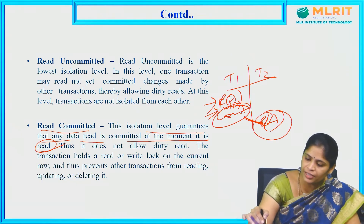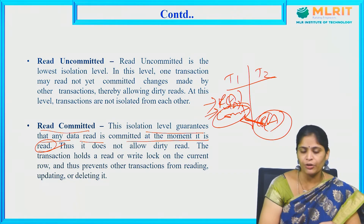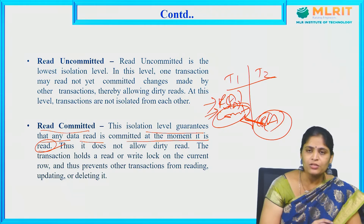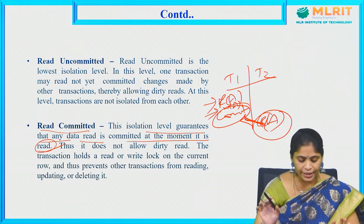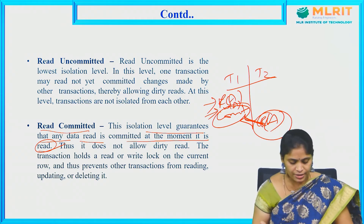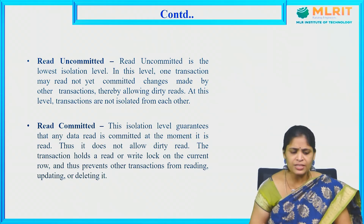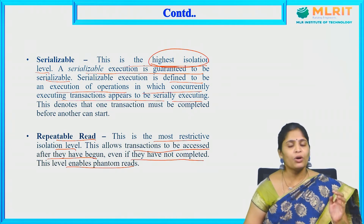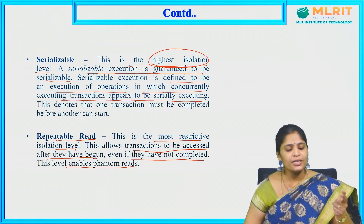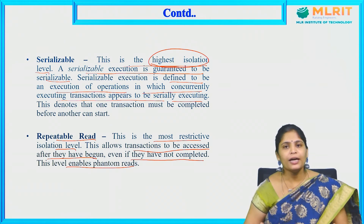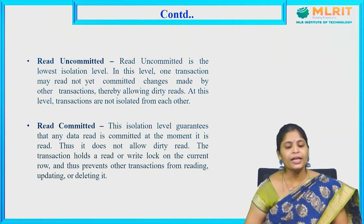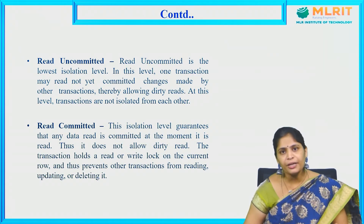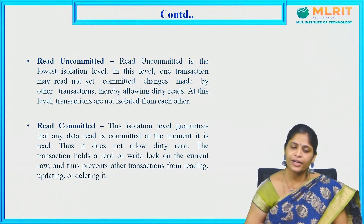Reading the data item after committing only — this may lead the data to a consistent state. These are the four isolation levels: Serializable, Repeatable Read, Read Uncommitted, and Read Committed.